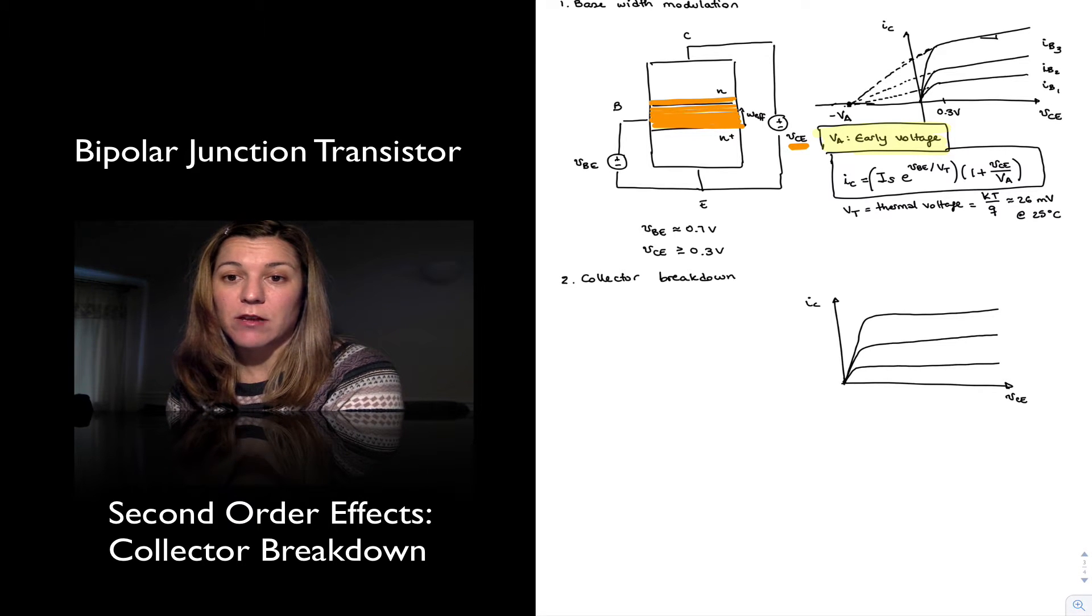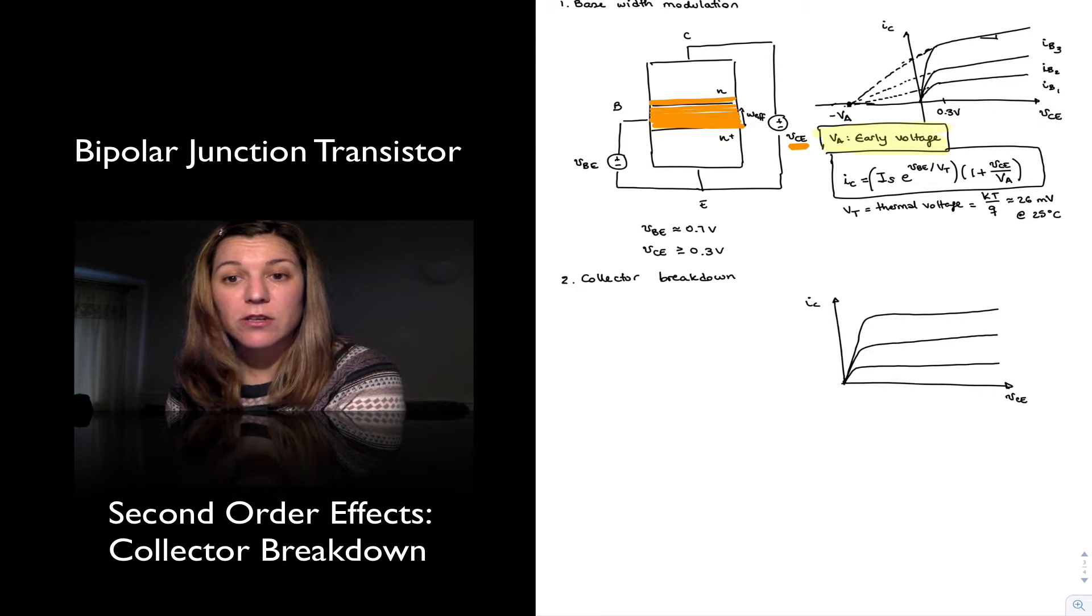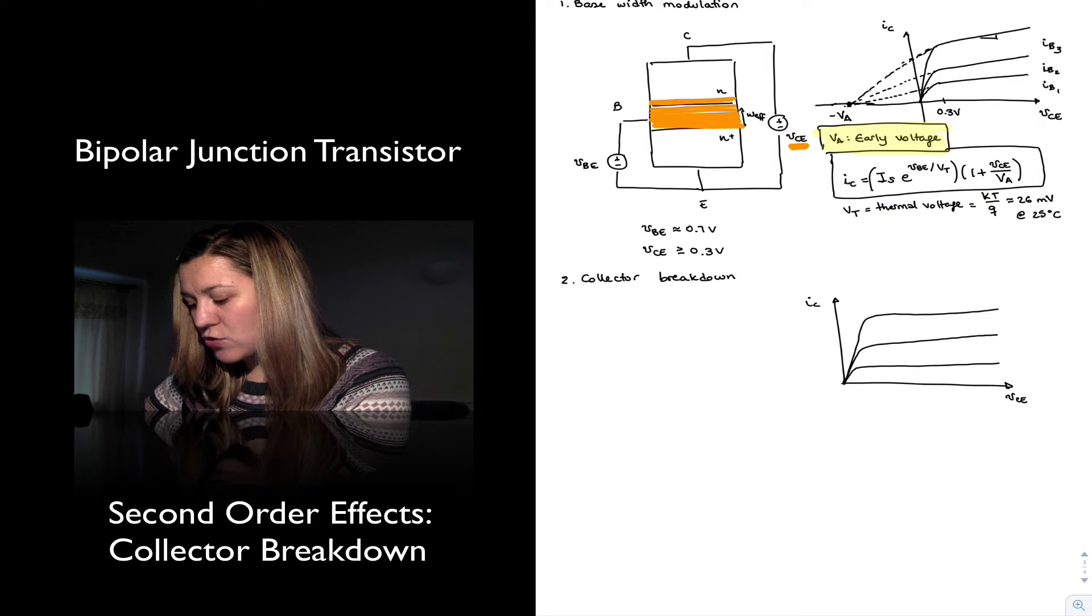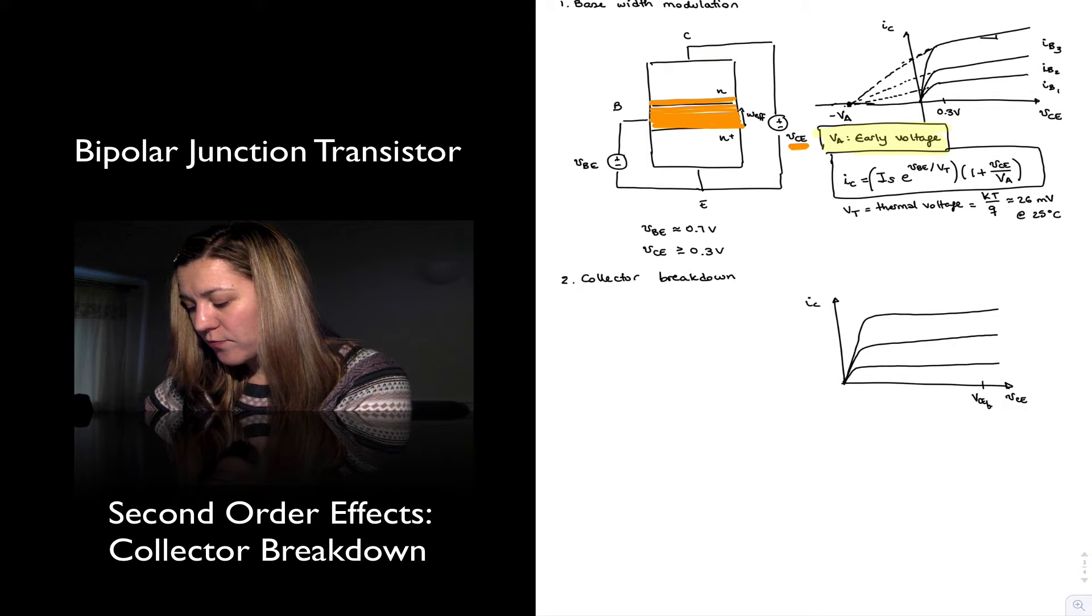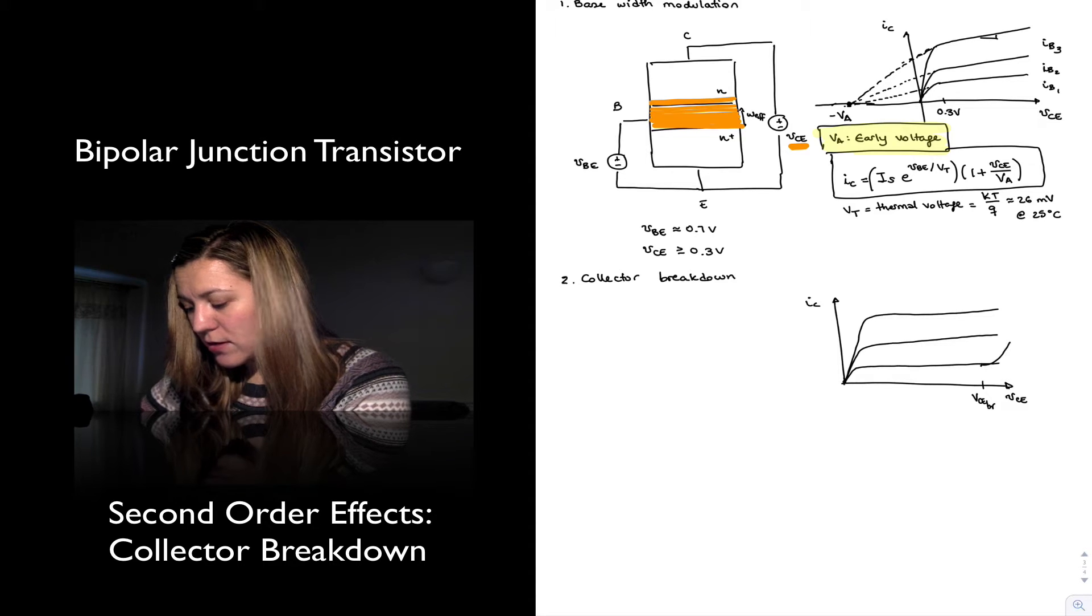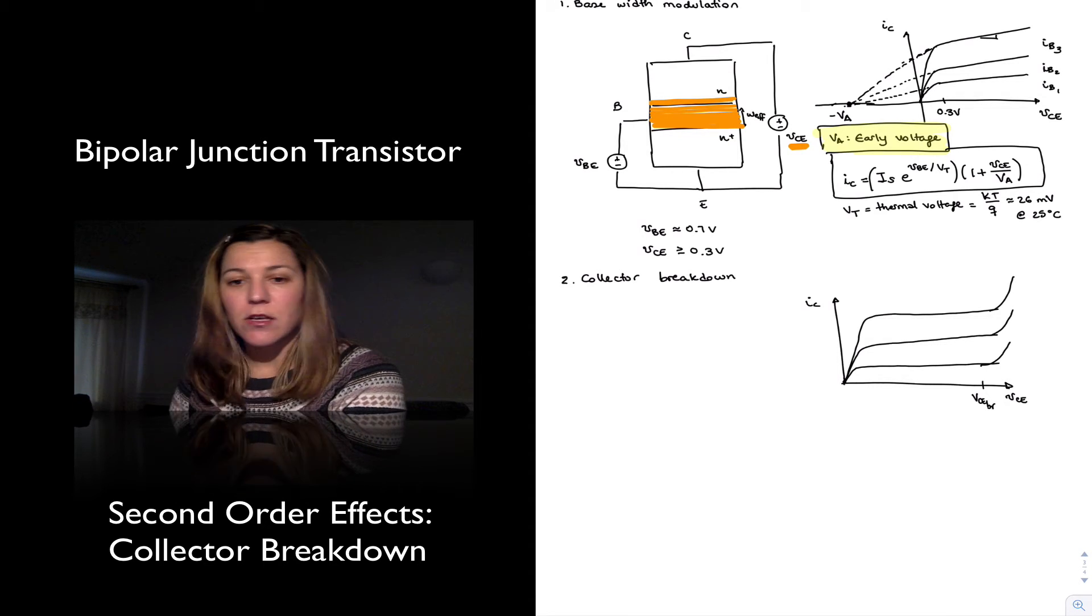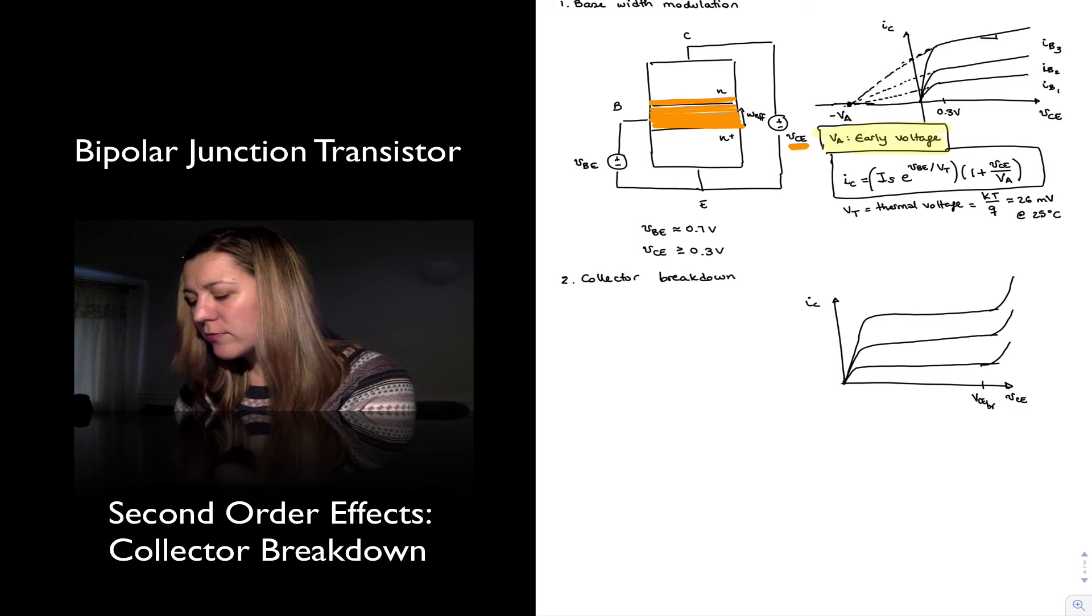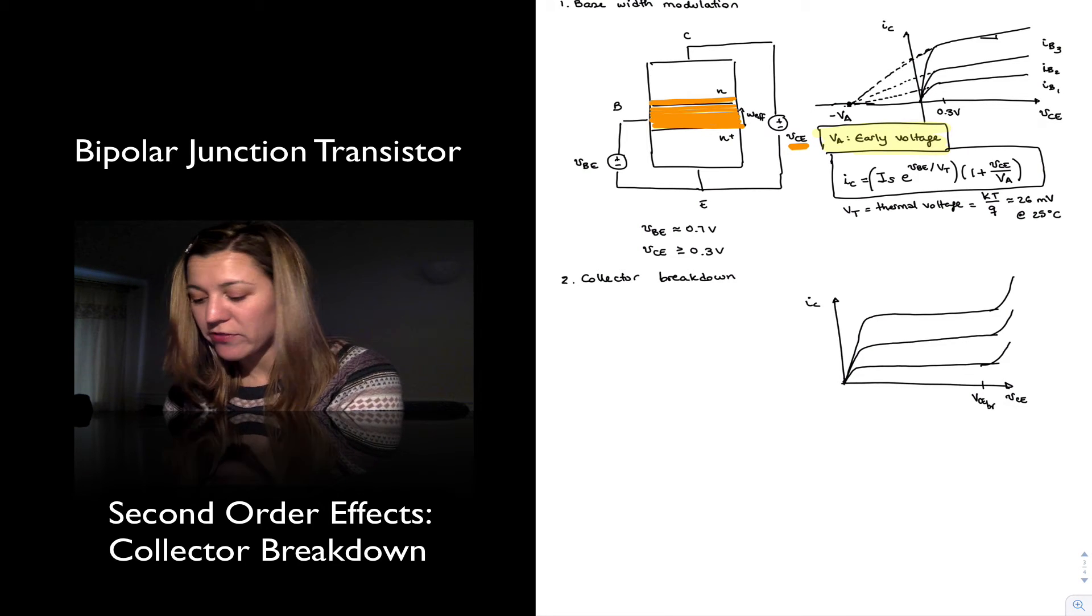before you start getting a drastic increase in current flow. And so as you go past your VCE breakdown, what you will get here is the same thing. It's just a drastic increase in collector current, which is typically an undesirable effect.